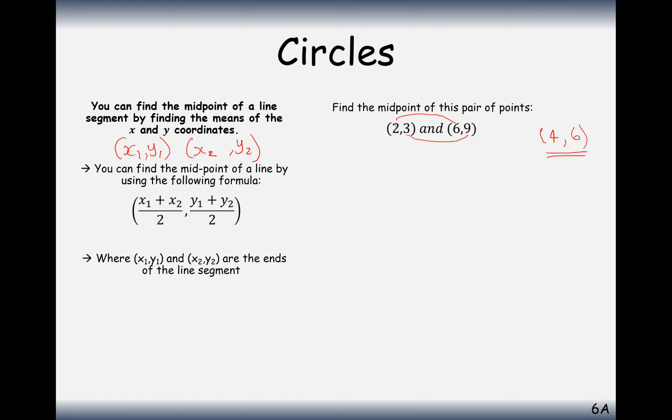Just work out the middle number between x's and the middle number between y's. So, just to see this formula in action, make sure all of your terms go in the correct position here. It doesn't matter which one's x1 and x2 or x1 and y1 or x2 and y2. Just use one of them. And you get 4, 6.